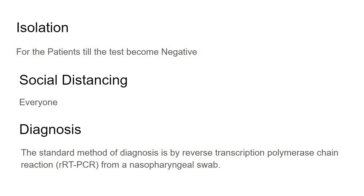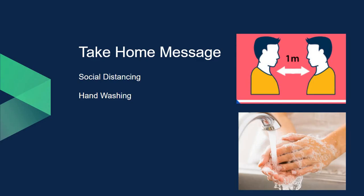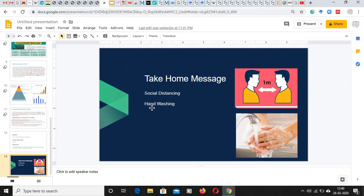Social distancing is recommended for everyone during this pandemic situation. Diagnosis is done by RT-PCR from a nasopharyngeal swab. So the take-home message is: social distancing and hand washing. Unless you fall under the specified three categories, you need not wear a mask, but you should follow social distancing — at least one meter distance between people — and hand washing.